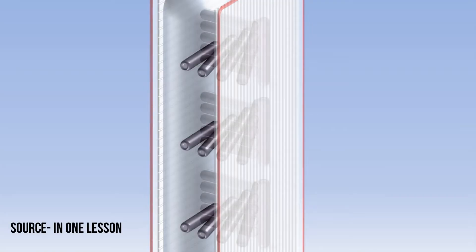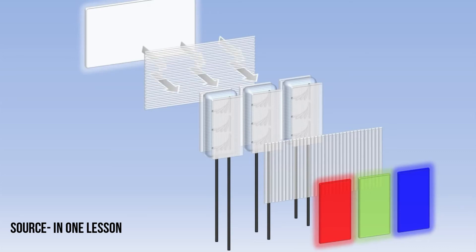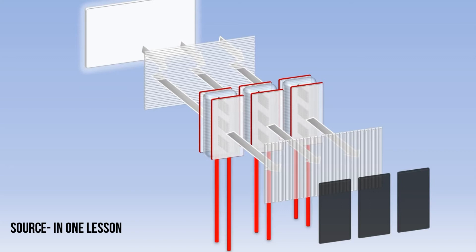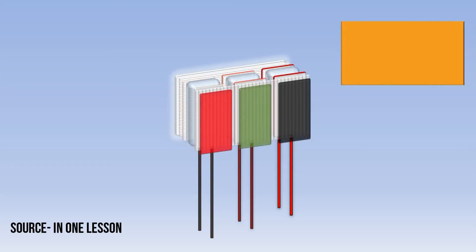The liquid crystals work with the backlight. The backlight passes through the liquid crystals, which rotate to control how much light passes through the red, green, and blue color filters. By rotating the liquid crystals to different levels, you can control the color and brightness shown on the display.